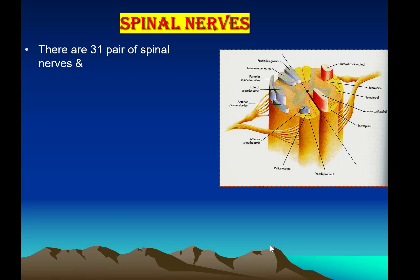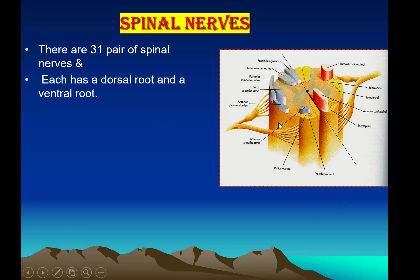There are 31 pairs of spinal nerves. Each has a dorsal root and a ventral root. Dorsal means posterior and ventral means anterior.